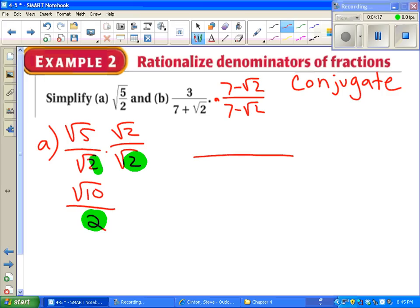Now let's see why this works out. On the bottom, you're going to multiply 7 plus square root of 2 times 7 minus square root of 2. And you'll get 49 minus 7 square root of 2 plus 7 square root of 2 minus 2. Look what happens to the middle. This happens every single time you multiply by a conjugate. It disappears. So how many square roots do we have on the bottom? None. Which is what we were going for.